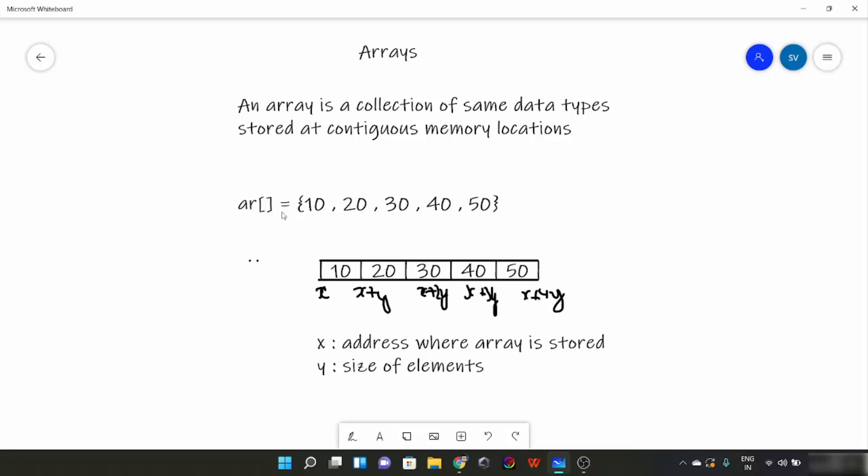Now let's talk about contiguous, what do we mean by contiguous memory locations. So this is our array: 10, 20, 30, 40, 50. And suppose the address of this array is x. So the first element would be at x, and suppose the size of elements is y. For char it is one byte, for integer the default size is four bytes. So that is our y. If the array is stored at position x, the next element would be stored at x plus y.